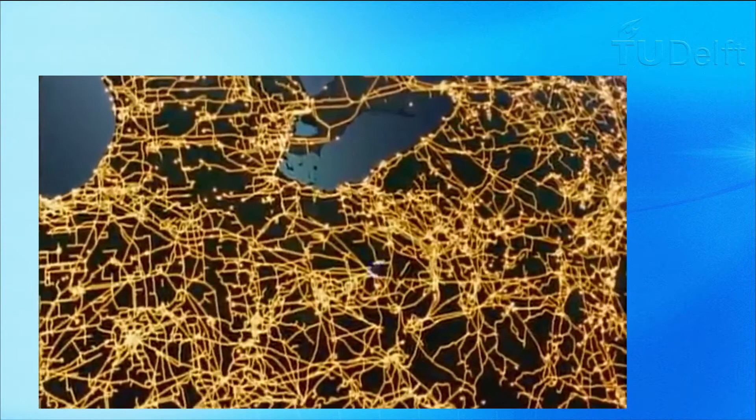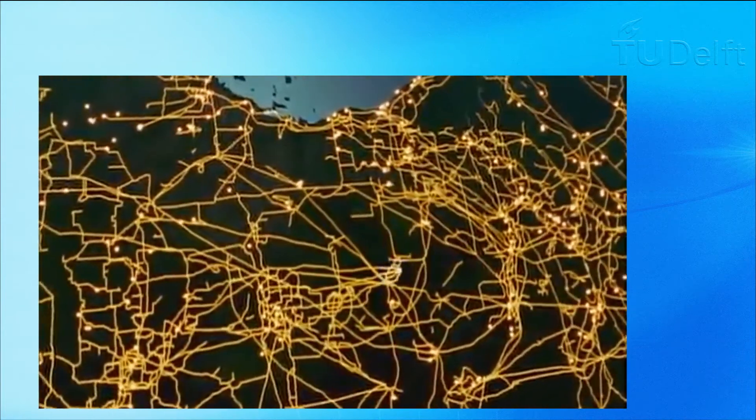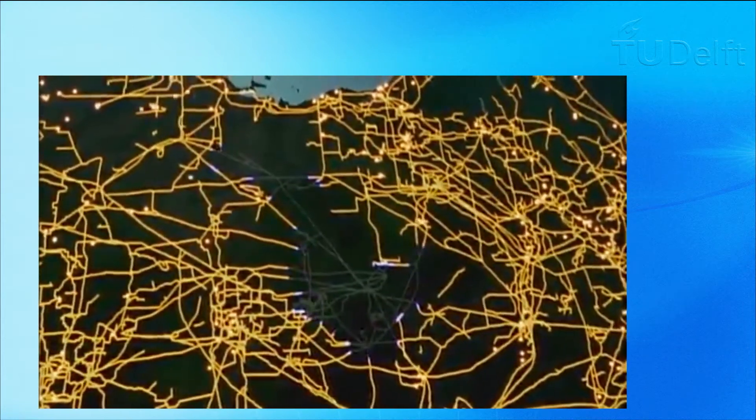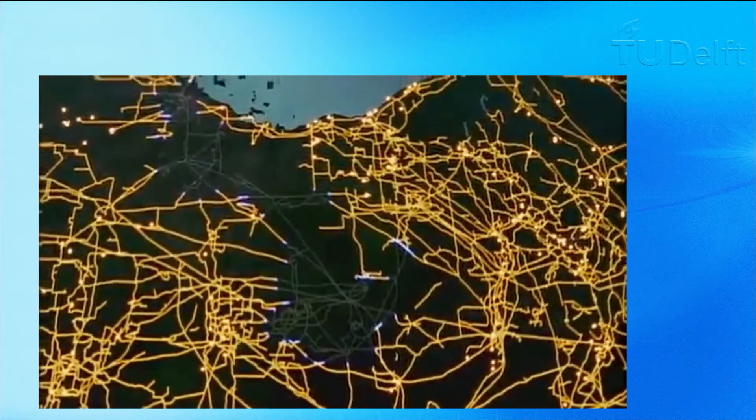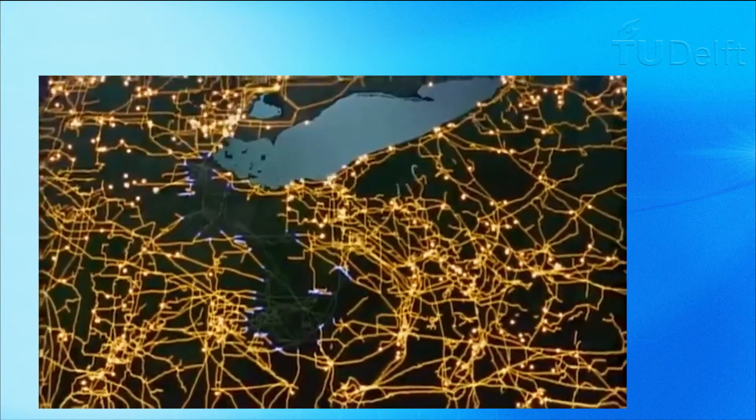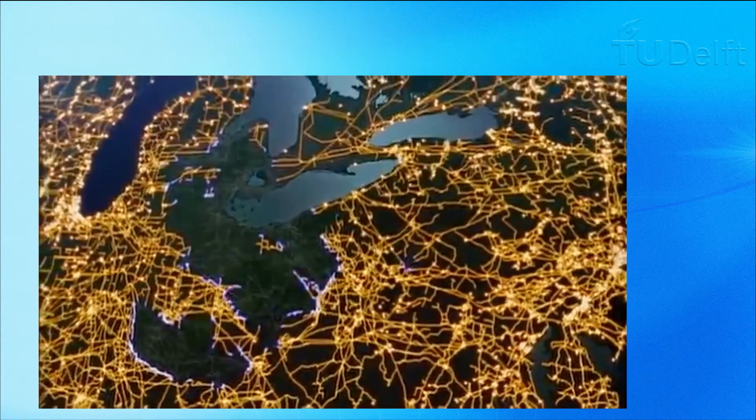This video shows cascading effects in a power grid. The system that fails causes an overload in neighboring systems and, as a consequence, these neighboring systems also fail. As an epidemic, the failures spread over the network and eventually result in a total blackout. The whole network cooperation collapses.